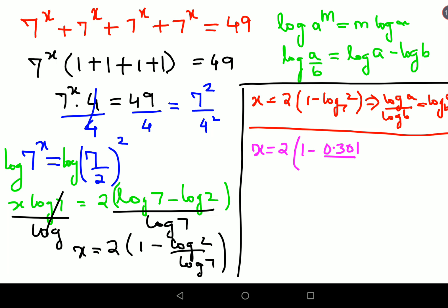Log(7) value is 0.845. So this now becomes x = 2(1 - 0.301/0.845). The division of this decimal comes out to be 0.356. So this is 2 × (1 - 0.356), which is 0.644, so value of x comes down to 1.288.